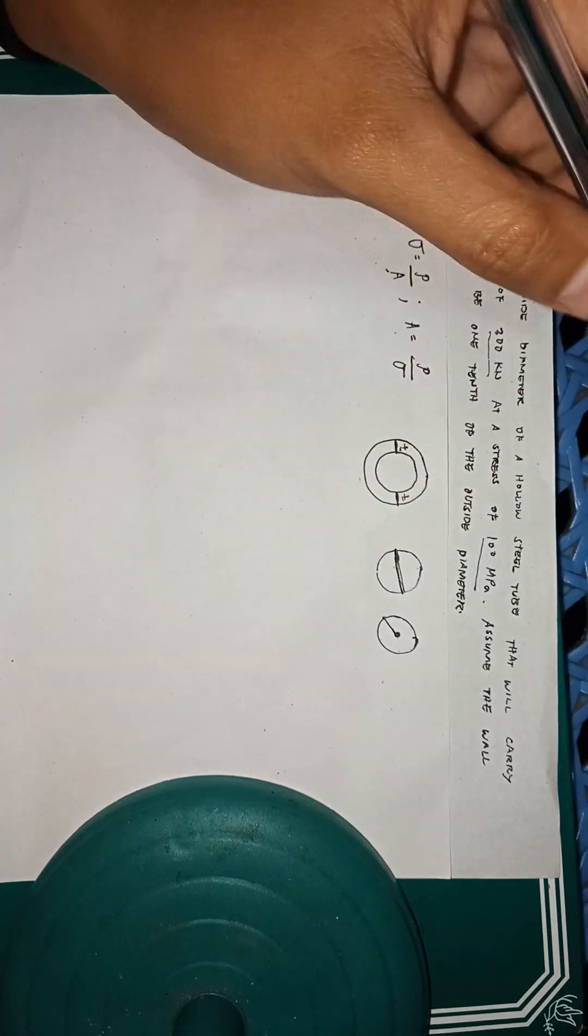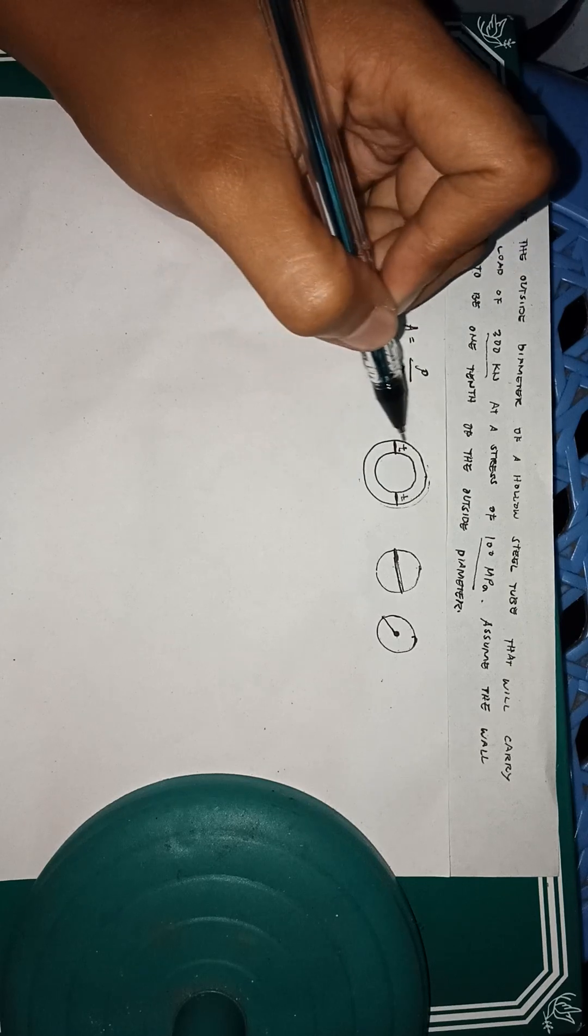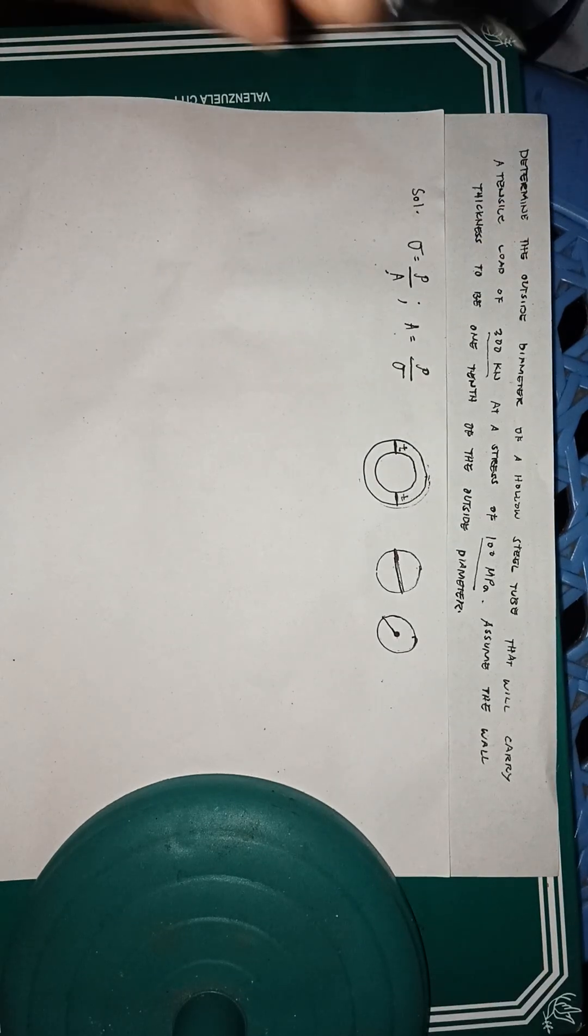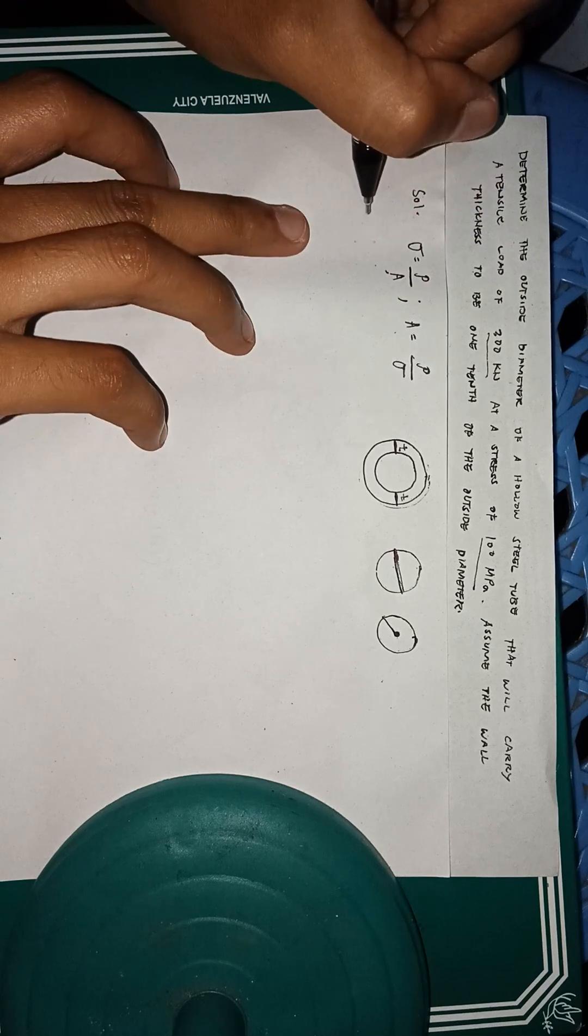The half of a circle that if we say radius, the radius is center and then this. And now we'll be finding the outside diameter, this one.